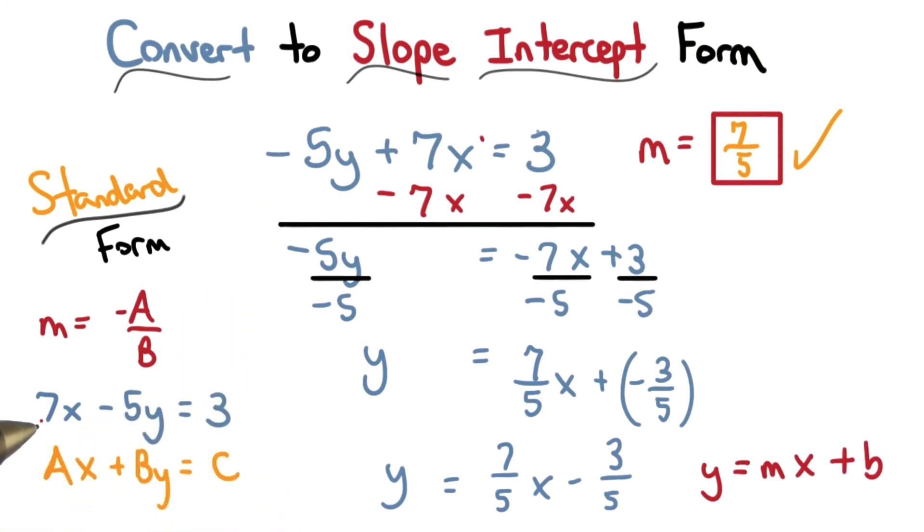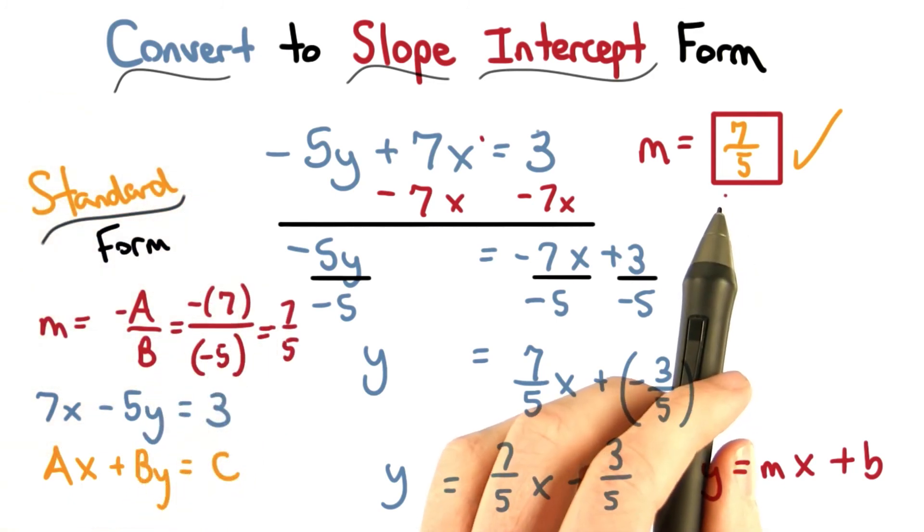So a is positive 7, and b is negative 5. A negative divided by a negative makes a positive, so I get 7 fifths. Still the correct answer.